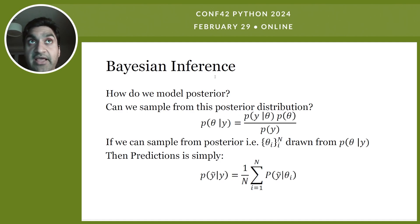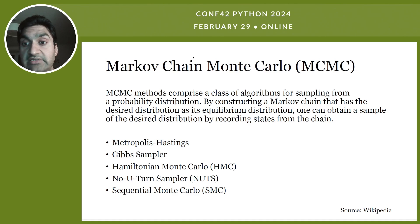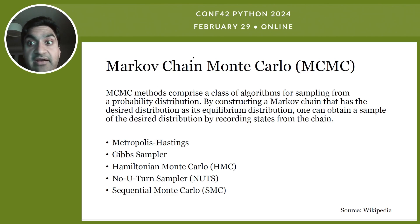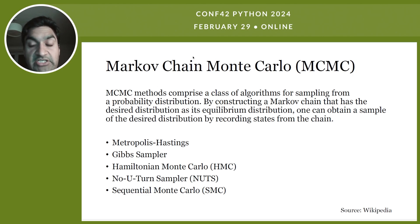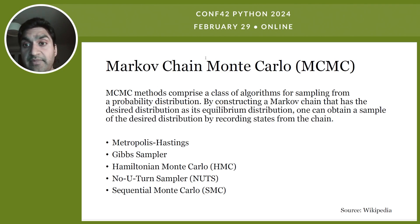To sample from the posterior, we rely on a special class of algorithms called Markov Chain Monte Carlo (MCMC) methods, through which we are able to sample from a probability distribution. If we construct a Markov chain that has the desired distribution as its equilibrium distribution, we can obtain samples by recording states from that Markov chain. Different MCMC samplers such as Metropolis and Gibbs sampling can help draw samples from this distribution.